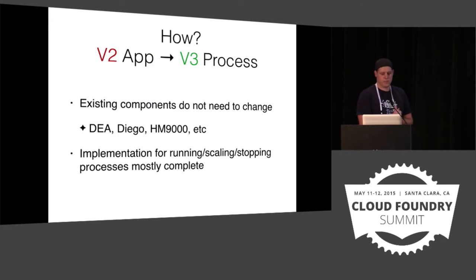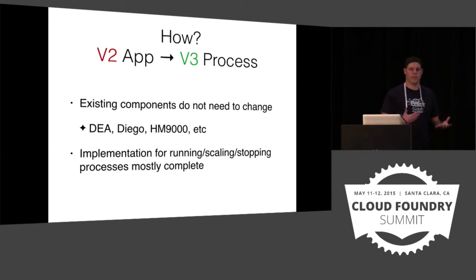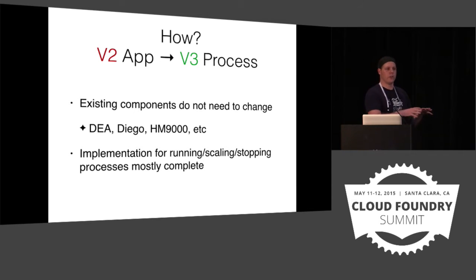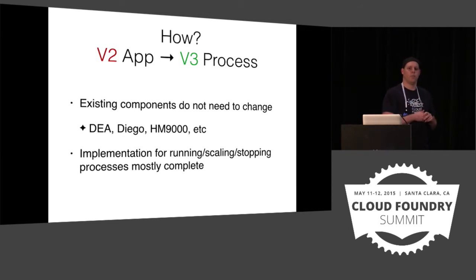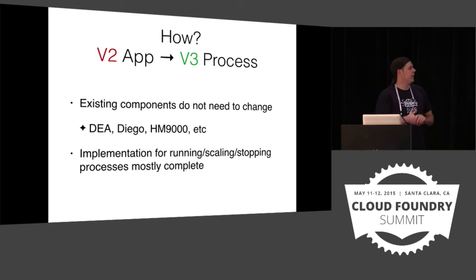This is important because it means we can isolate our changes inside the Cloud Controller code base. We don't have to change DEA, Diego, HM9000, or all that health management stuff — they're still going to know how to run a process, which was the V2 app. So running, scaling, and stopping are all basically done.